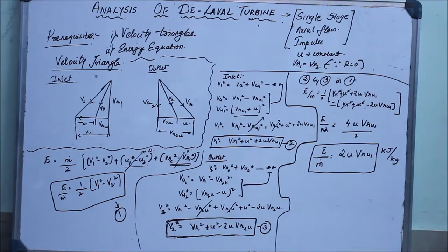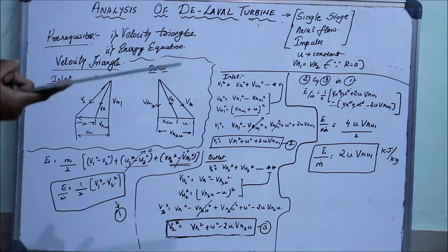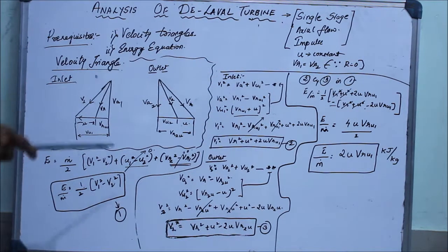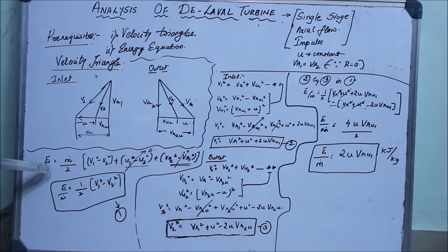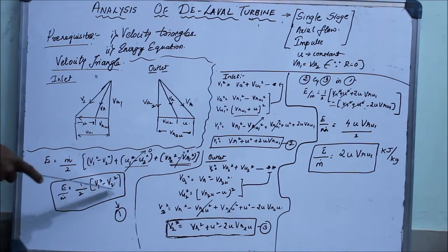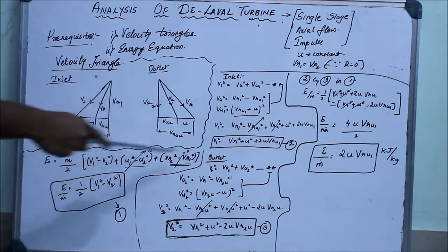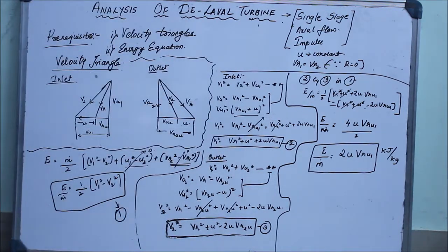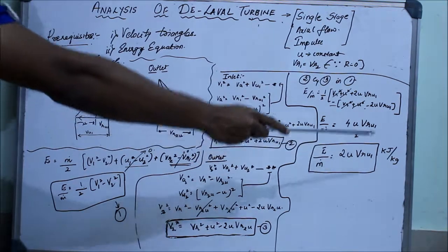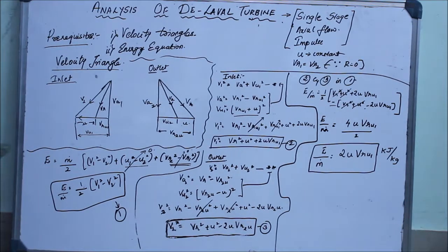To recap: the key prerequisites are that U is constant (U1 = U2), the relative velocity is constant (Vr1 = Vr2), and the tangential component of the relative velocity VrU1 equals VrU2. Remember the inlet and exit velocity triangles. In the energy equation, the U² and Vr² terms cancel, leaving only the absolute velocities, and after substituting and simplifying you get E/ṁ = 2·U·VrU1, which is in kilojoules per kg. If ṁ is given, it becomes kilojoules — that is the work output.